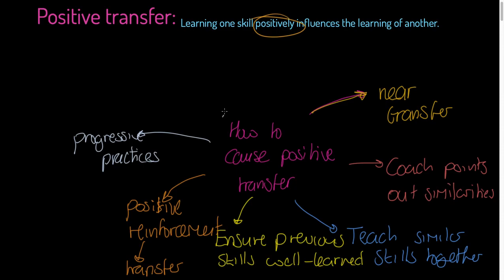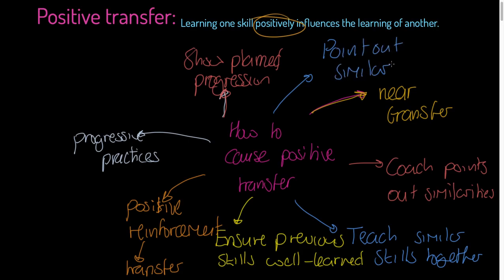The coach can also show planned progression. When we're coaching, we want to show the athletes that we're going to start at point A but we're trying to reach point B, trying to apply it in the game in certain ways. That's good practice for a coach. Finally, we want to point out similar information processing requirements. If the information processing for catching a ball in cricket and rounders is very similar, the stimuli are similar, and we can guide people to do that the same way.